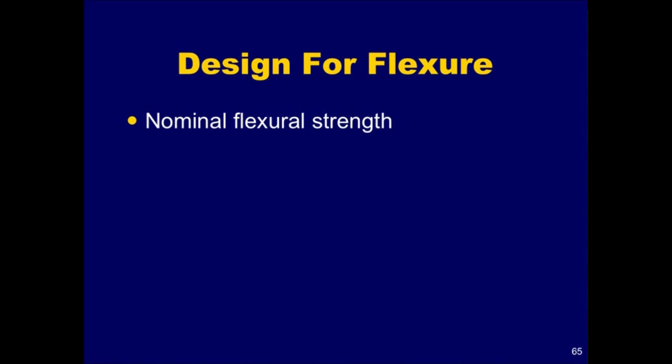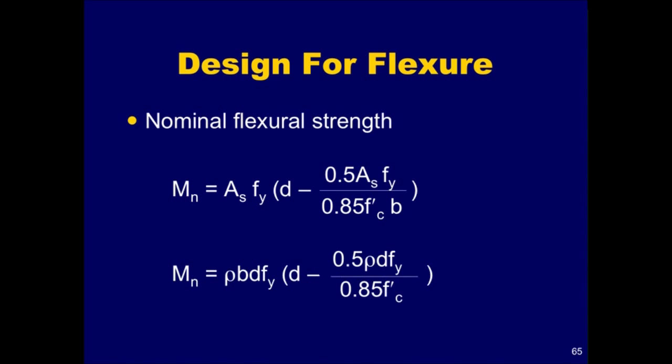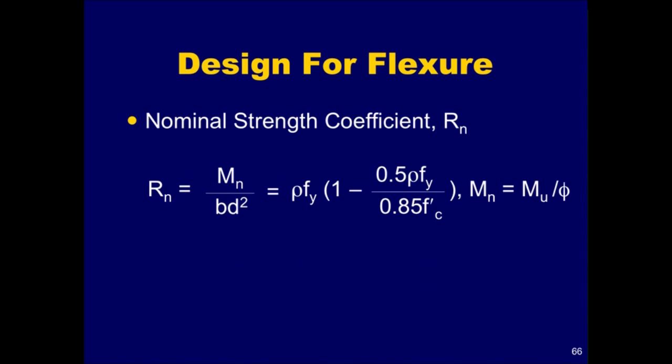Before introducing the design procedure for flexure, a few important items will be introduced that will help in the overall design process. The equation for the nominal flexural strength of a rectangular concrete section with only tension reinforcement was derived in the previous section. This equation can be rewritten in terms of the reinforcement ratio rho, which is equal to the area of steel A sub s divided by the beam width B times the effective depth D. A nominal strength coefficient of resistance, R sub n, can be obtained by dividing each side of the nominal flexural strength equation by B times d squared.